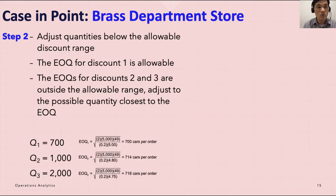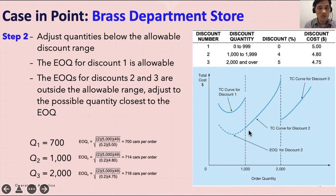In step two, we can adjust quantities below the allowable discount range. If EOQ for discount one is allowable, then you use 700 as your EOQ value. However, if you look at discount two, even though the EOQ is 714, it's not relevant. So what you have to do is choose the lowest quantity in that discount level, and that one is 1,000. We're going to take advantage of the discount at the lowest possible cost, so therefore 1,000 should be your option.